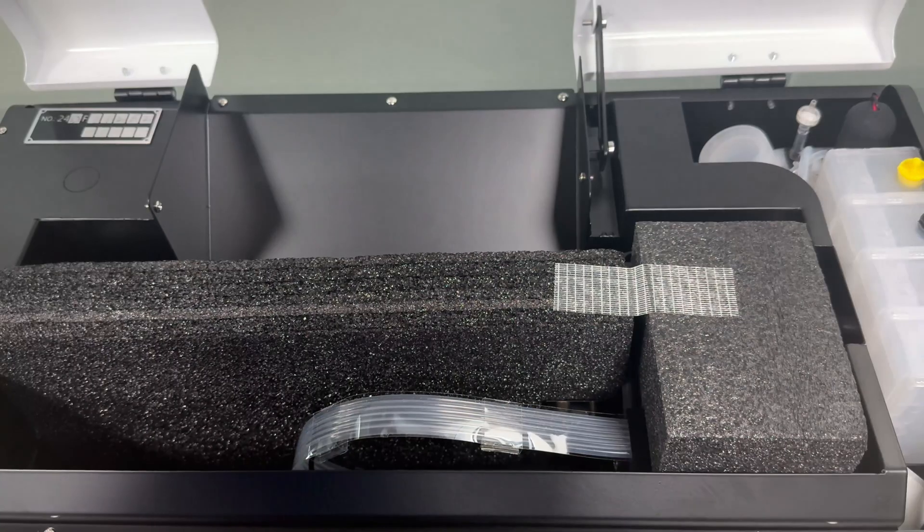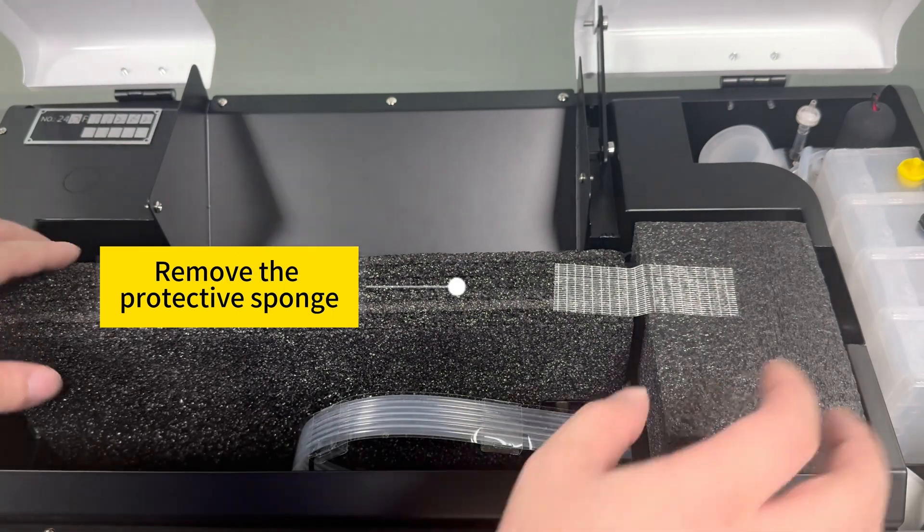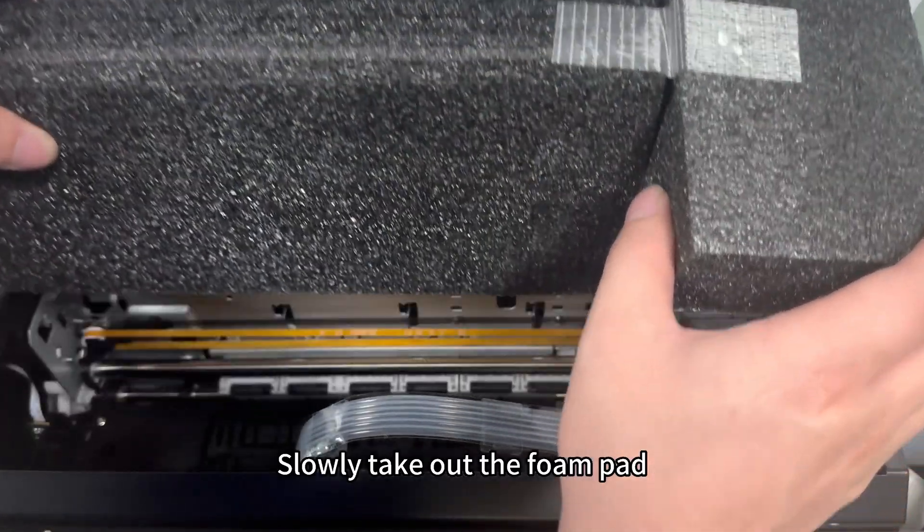Open the printer cover. Remove the protective sponge, then slowly take out the foam pad.